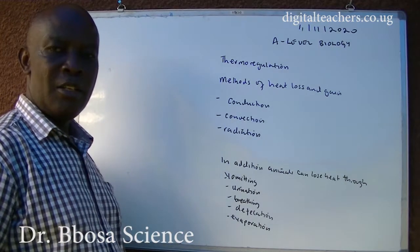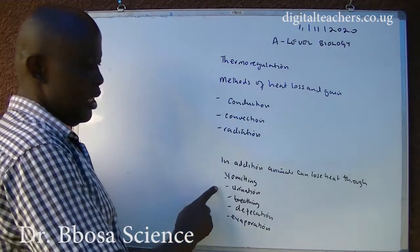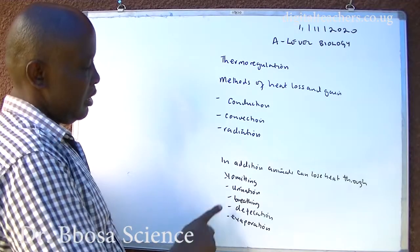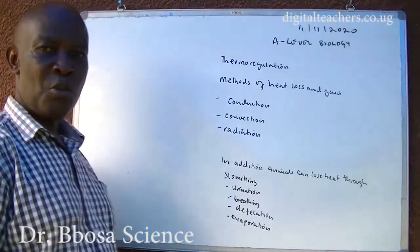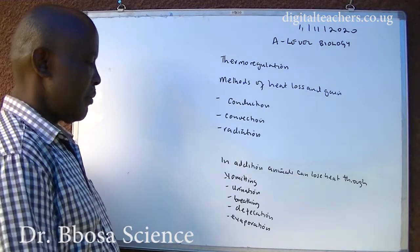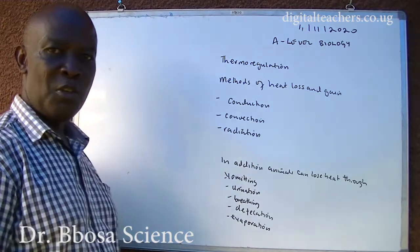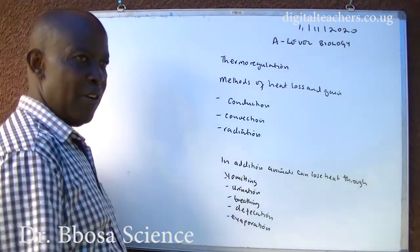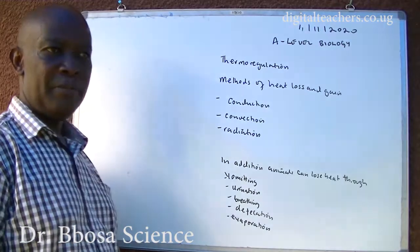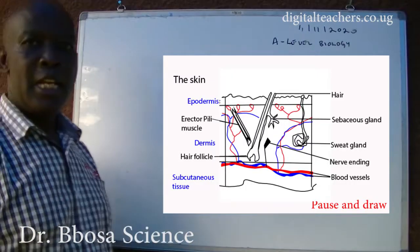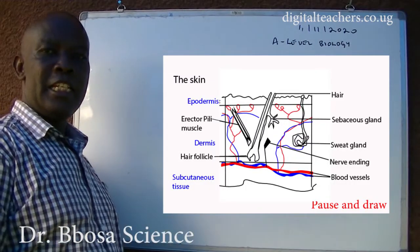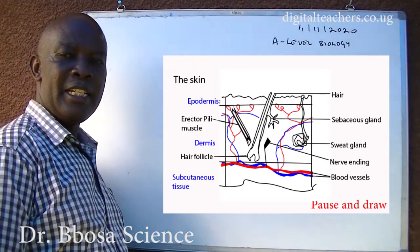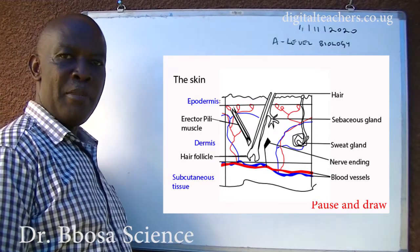Animals can lose heat through vomiting hot materials, urination of hot water, breathing out hot gas, defecation, and evaporation. The skin is the major thermoregulatory organ in mammals.